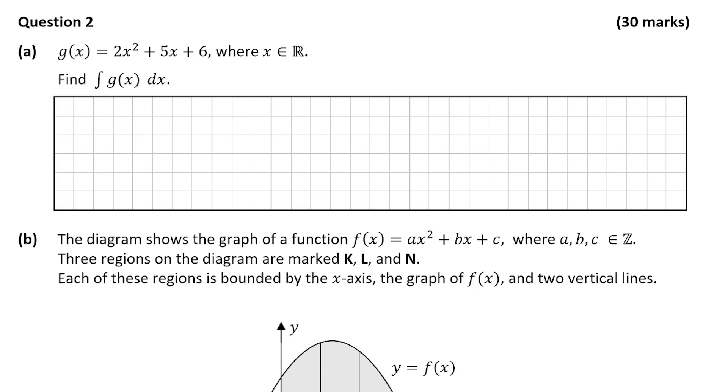We are told that g(x) is equal to 2x² + 5x + 6 where x is an element of the real number line, and we're asked to find the integral of g(x). How are we going to do this? So we have our g(x), I'm just going to write that down first, and that is equal to 2x² + 5x + 6.